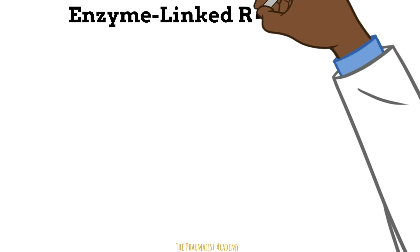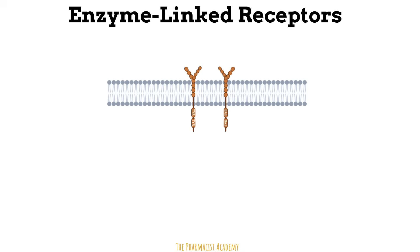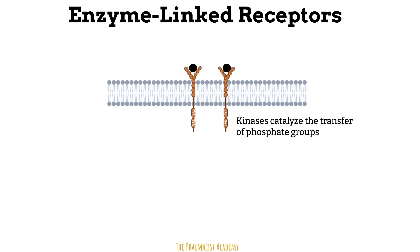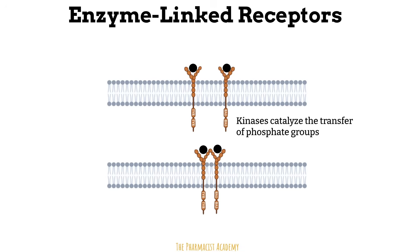Next, we have the enzyme linked receptors. These are transmembrane receptors that have catalytic sites on the cytoplasmic domain. Examples of these are the tyrosine kinase receptors — they have tyrosine residues attached, shown here as TYR. These tyrosine residues serve as kinases, which catalyze the transfer of phosphate groups. When a ligand binds to these receptors, they join together and form a dimer. The tyrosine kinases then take a phosphate group from ATP and autophosphorylate the dimer, propagating a signal cascade leading to a response.